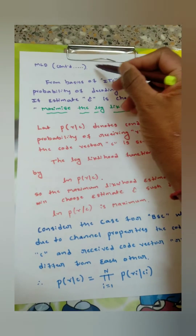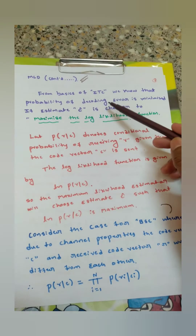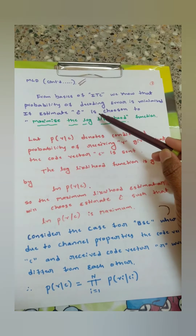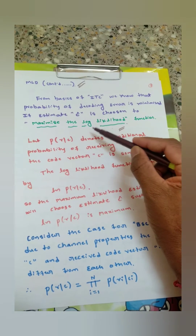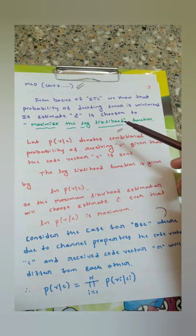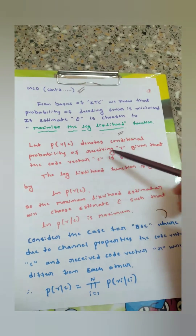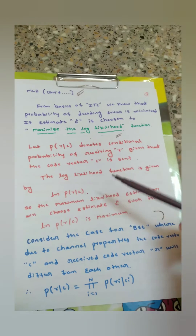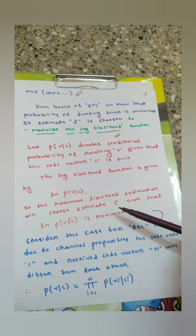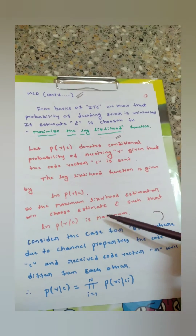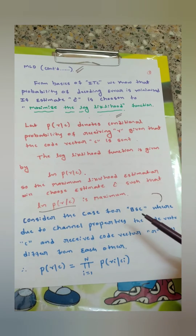The estimate c-cap is said to be optimum if the probability of decoding error is minimum. From basics of information theory, we know the probability of decoding error is minimized if c-cap is chosen to maximize the log-likelihood function. Maximum likelihood decoding mainly depends on this maximum log-likelihood function: if the log-likelihood function is larger, the probability of error will be less. Let P(r|c) denote the conditional probability of receiving r given that code vector c was sent.